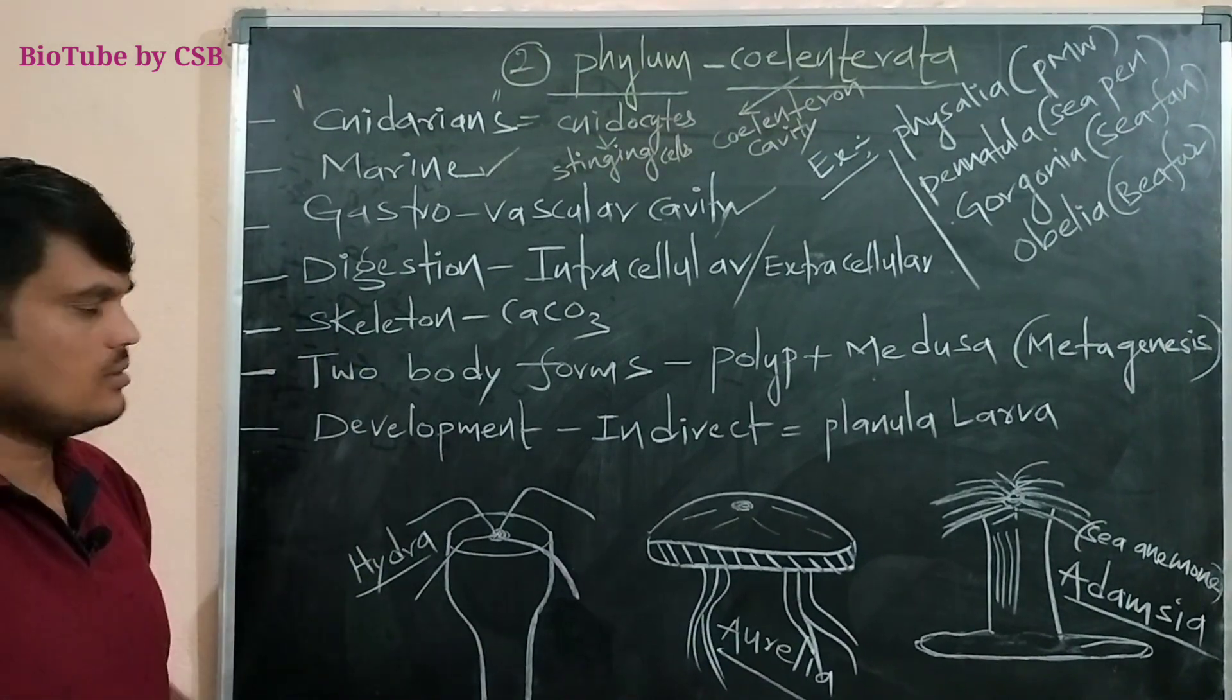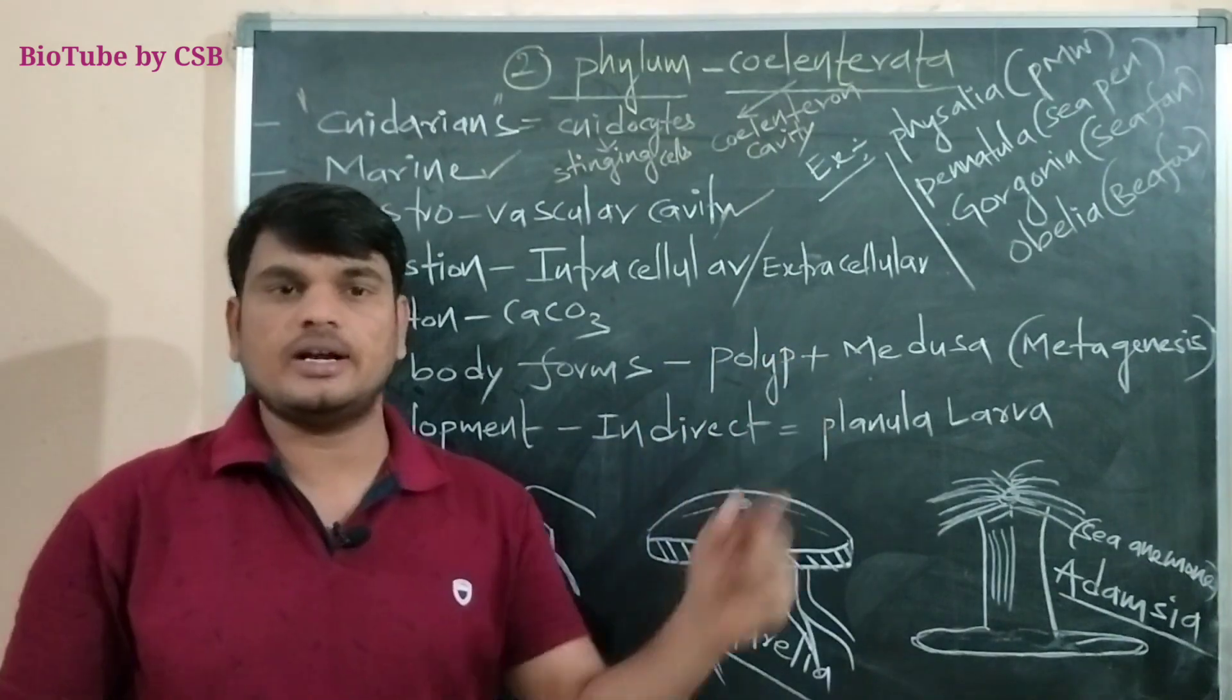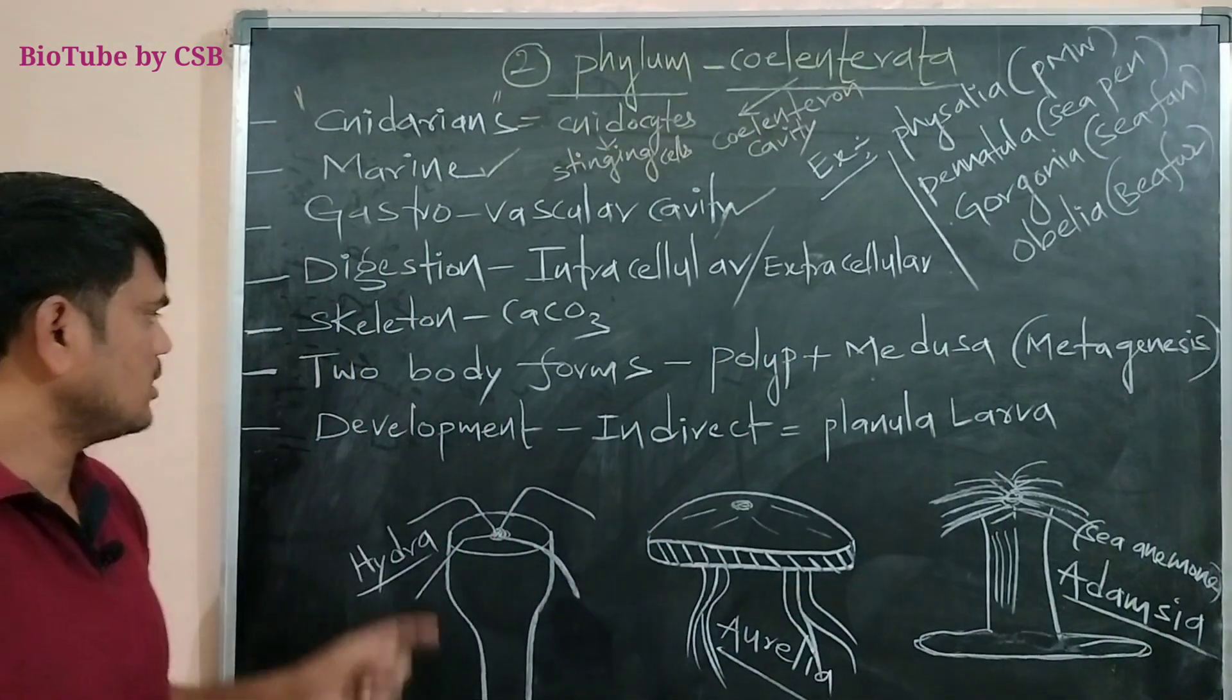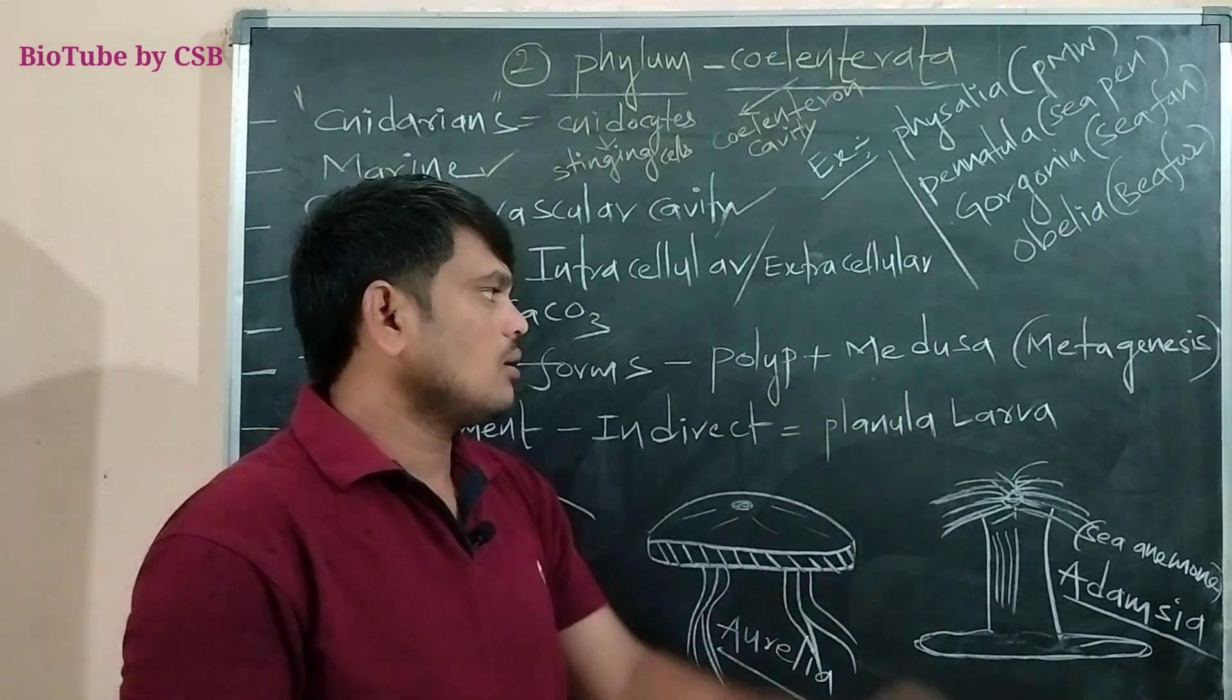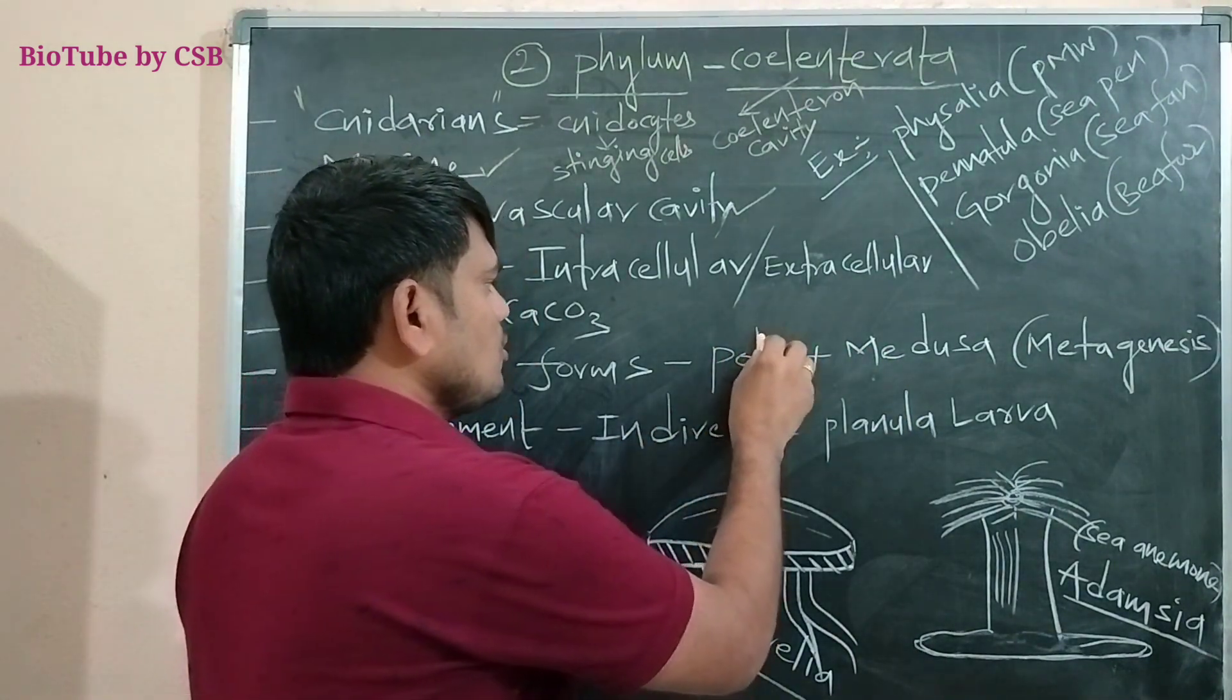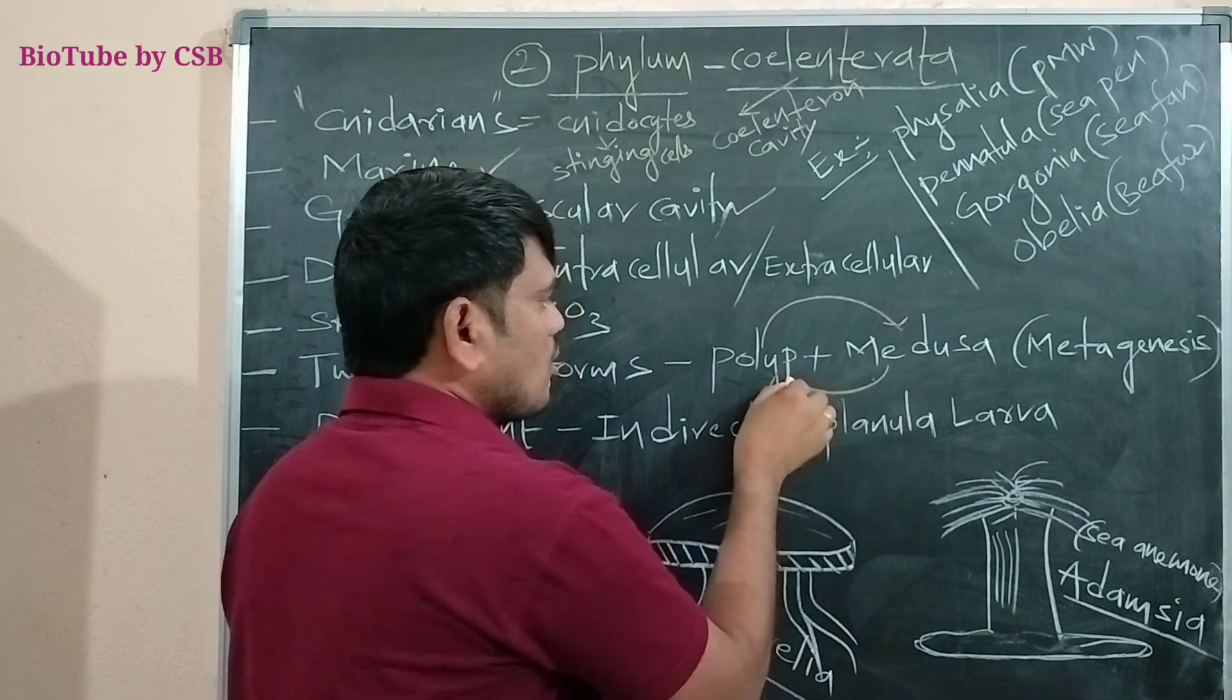What about skeleton of your body? The skeleton of your body made up of calcium carbonate. Two body forms are appeared throughout the life. Polyp and Medusa. From the polyp, Medusa is formed. From the Medusa, polyp is formed.